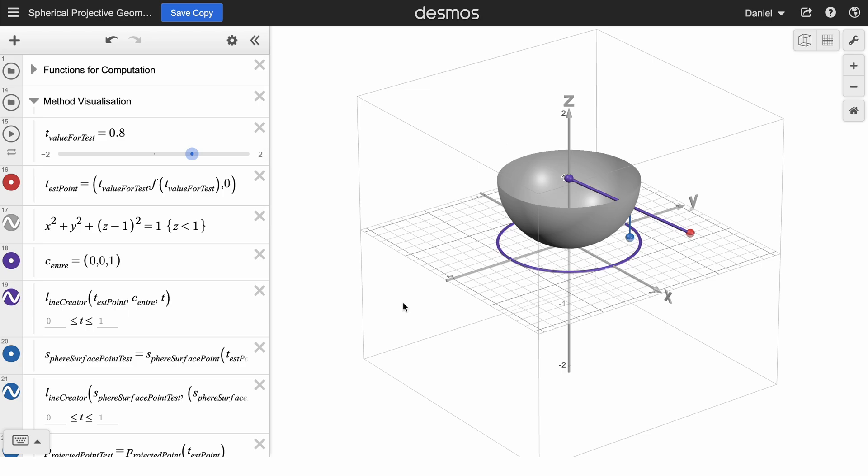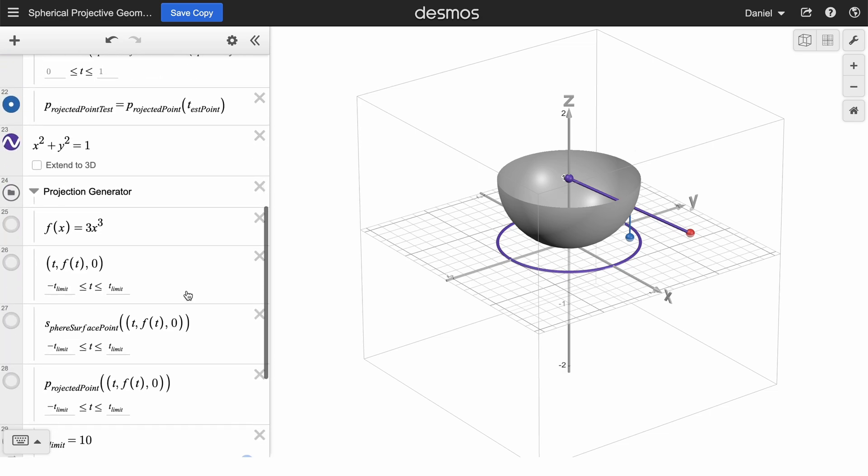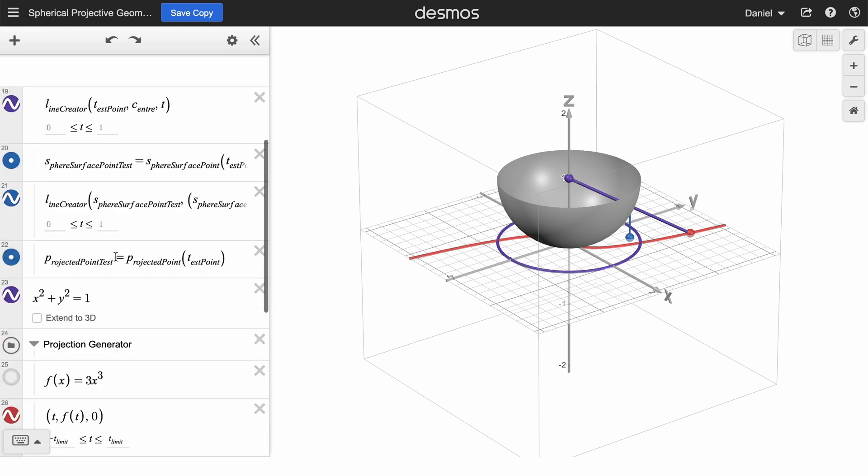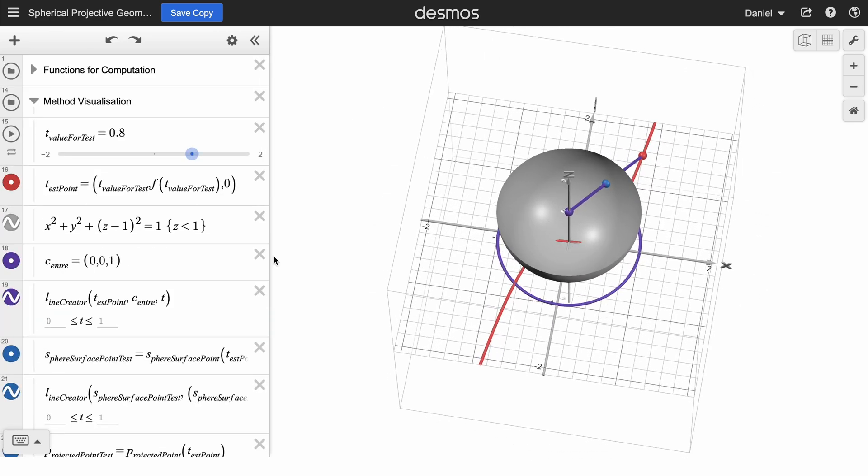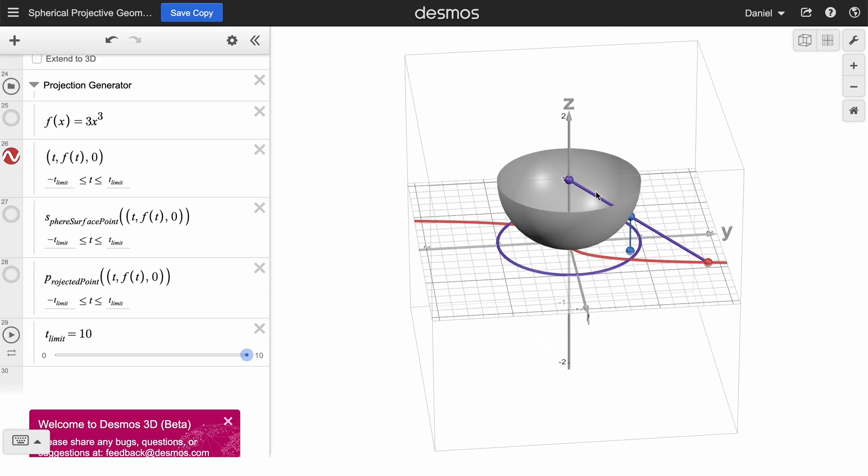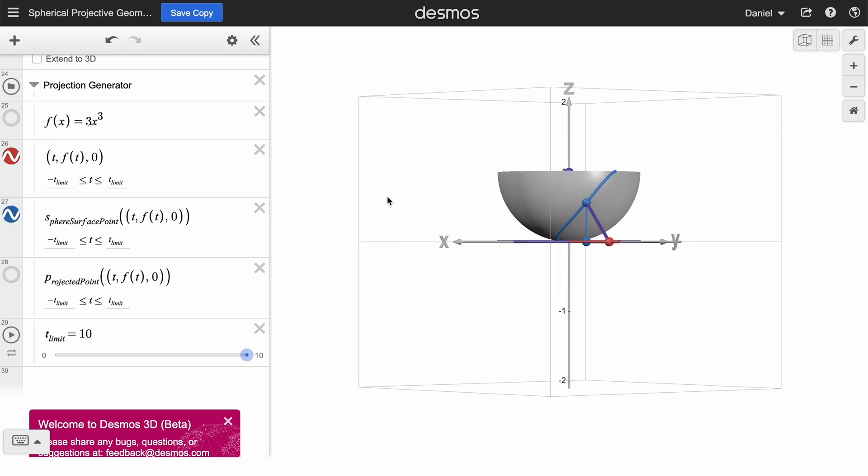And because this function works for individual points, it will also work for entire functions. The easiest way is to define a function parametrically like I have here. This red curve is y equals x cubed graphed parametrically on the xy plane. And as I move the slider, the red point moves along this red curve. We can see how this blue point here on the surface of the hemisphere traces out a path as this red point traces out y equals x cubed. This is what the path looks like.